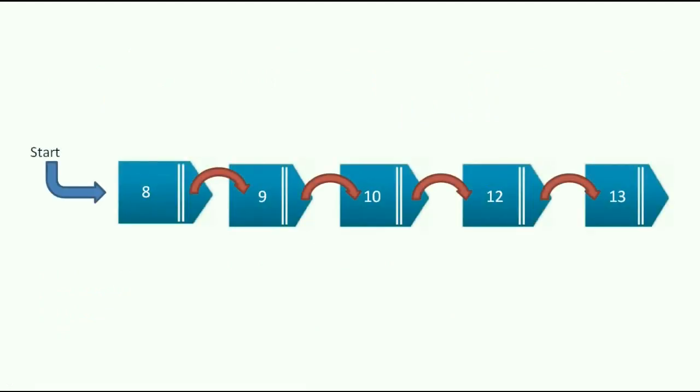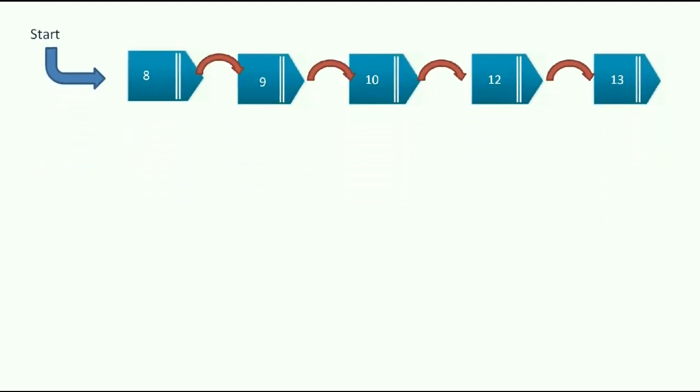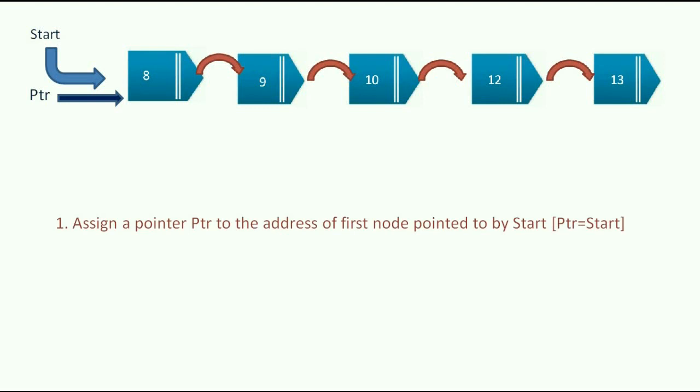Let us see how to insert a new node before a particular node in a single linked list. This is a single linked list where start is pointing to the first node. Take another pointer PTR that also points to the first node, containing the address of 8.